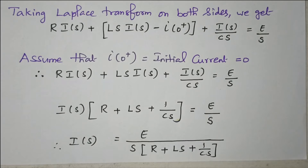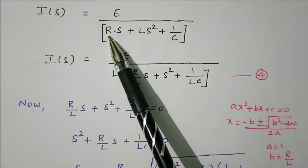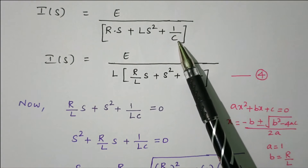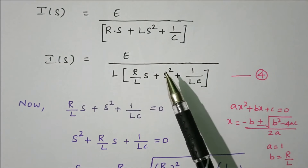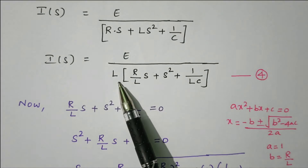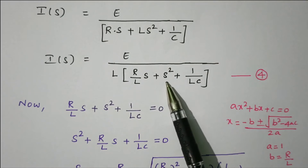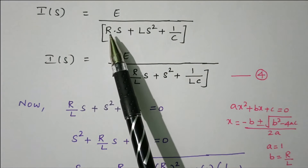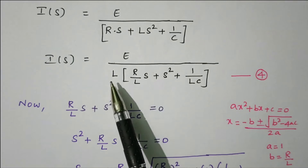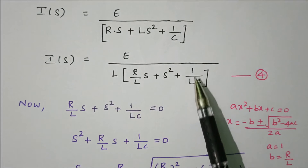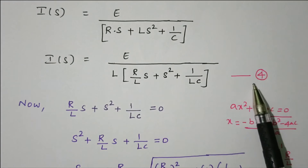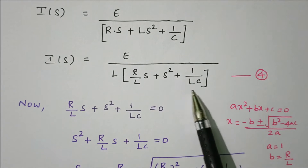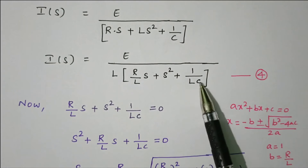Now we go for further simplification. Multiplying S inside the denominator gives RS + LS² + 1/C, with the S cancelling the 1/(CS) term. Bringing L outside to get the standard quadratic form: I(S) = (E/L) / [S² + (R/L)·S + 1/(LC)]. This is equation number 4, in the standard form S² + (R/L)S + 1/(LC).